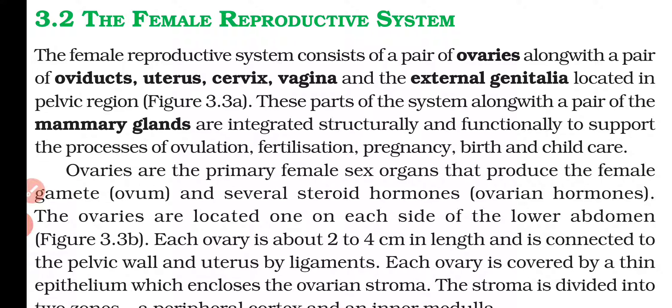Ovaries are the primary female sex organs. They produce the female gamete called the ovum, and also produce steroid hormones called ovarian hormones. So ovaries have two functions: first, producing the ovum, and second, producing the ovarian hormones.